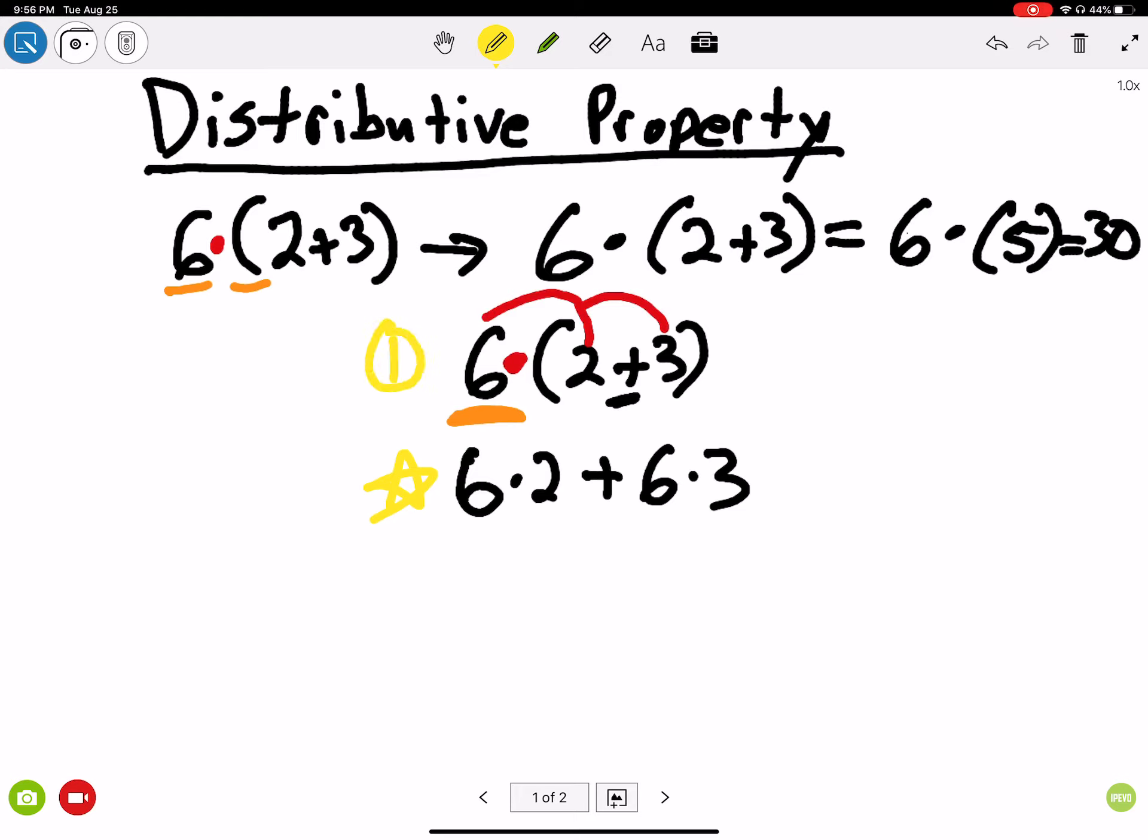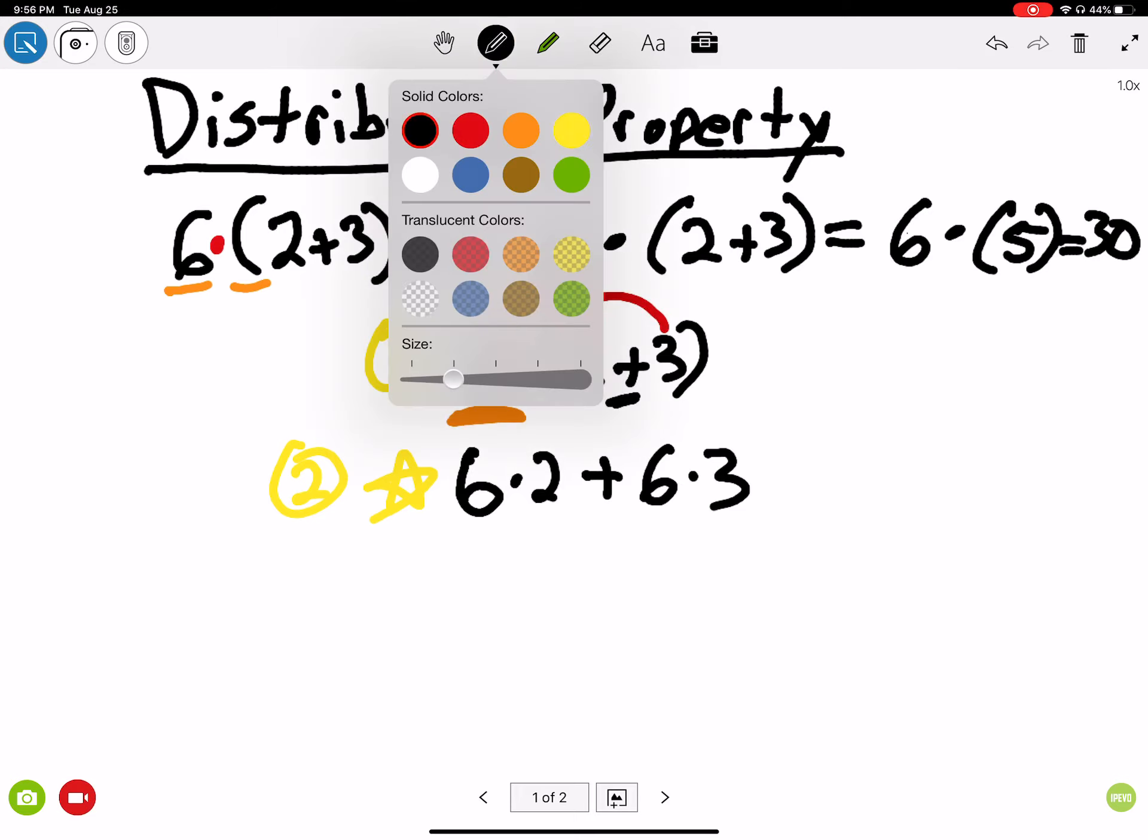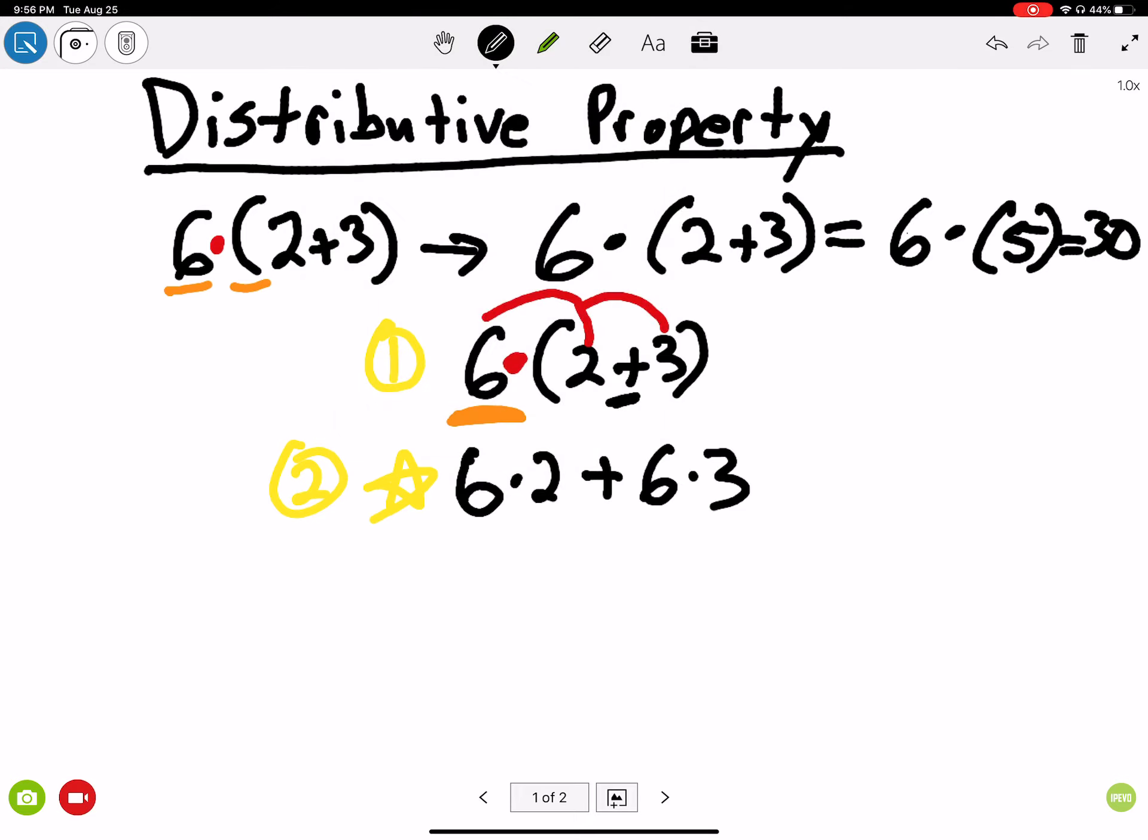This is what happens after you do the distributive property. After you do the distributive property, you go from step 1 to step 2. You're thinking to yourselves, this is so many extra steps, why am I doing this? That's okay. Just understand the concept first, and we'll talk about why later. 6 times 2. 6 times 2 is 12, plus 6 times 3 is 18.